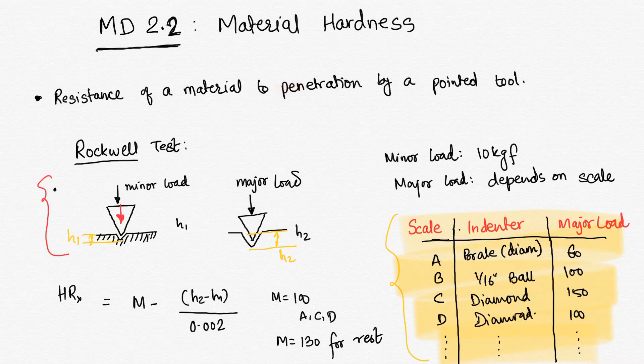After that, I will apply the major load while the minor load is still there. Major load depending upon our scale - let's talk about A scale - I will use a 60 kg load. Again, I will press the indenter, equilibrium will be reached, and I will remove the major load. After removing the load, maybe a certain partial recovery from the depth will be there and finally I will get a depth of indentation as H2.